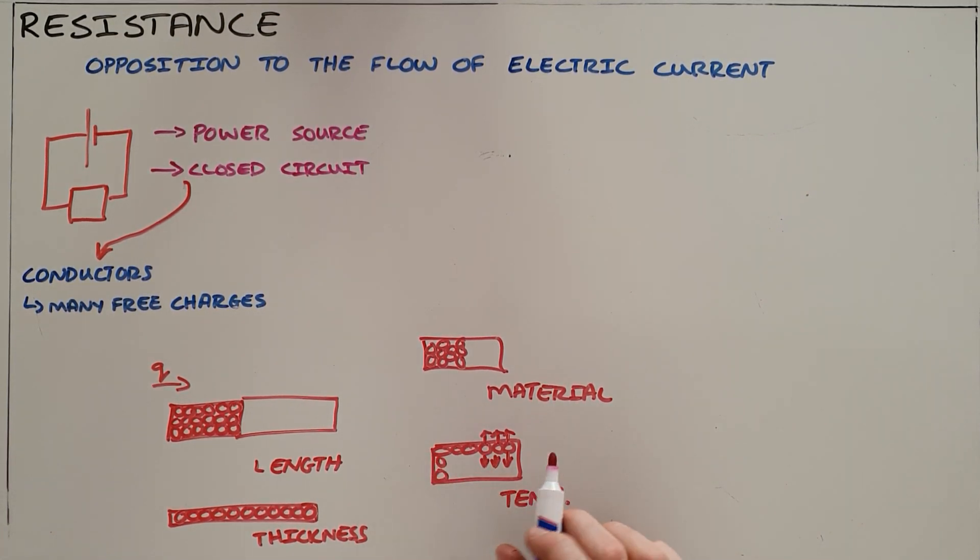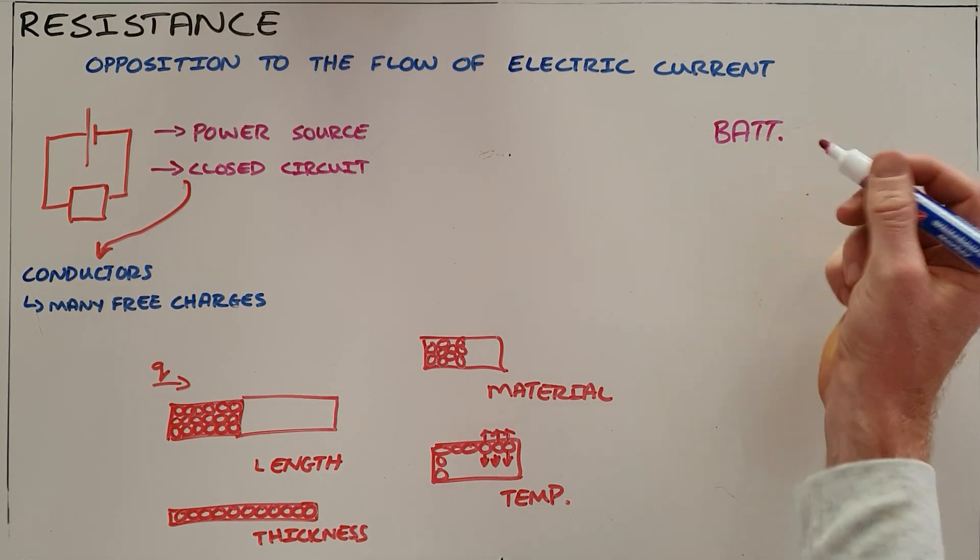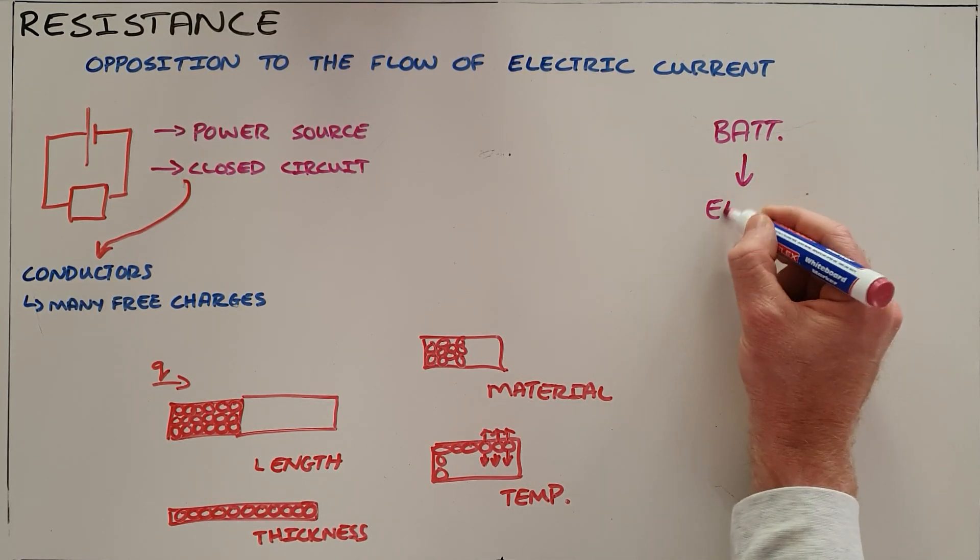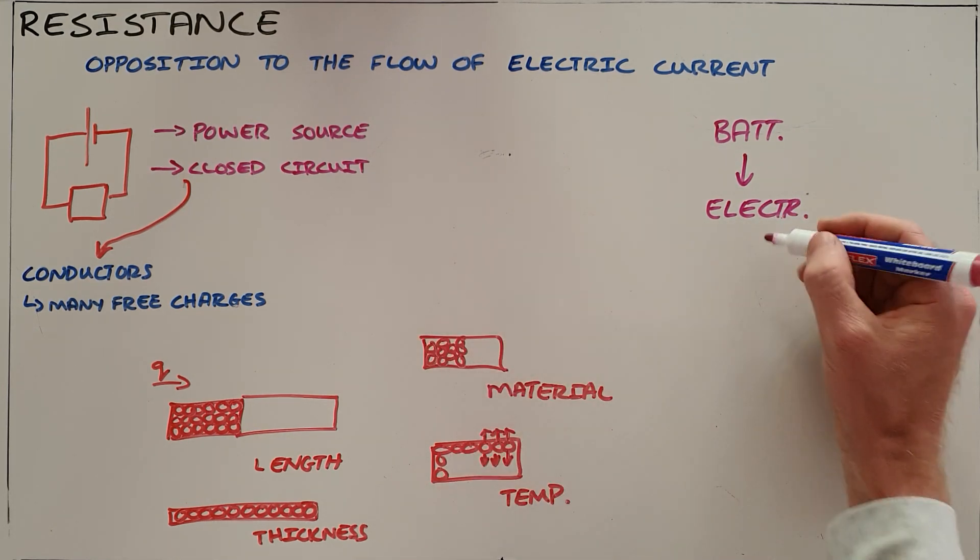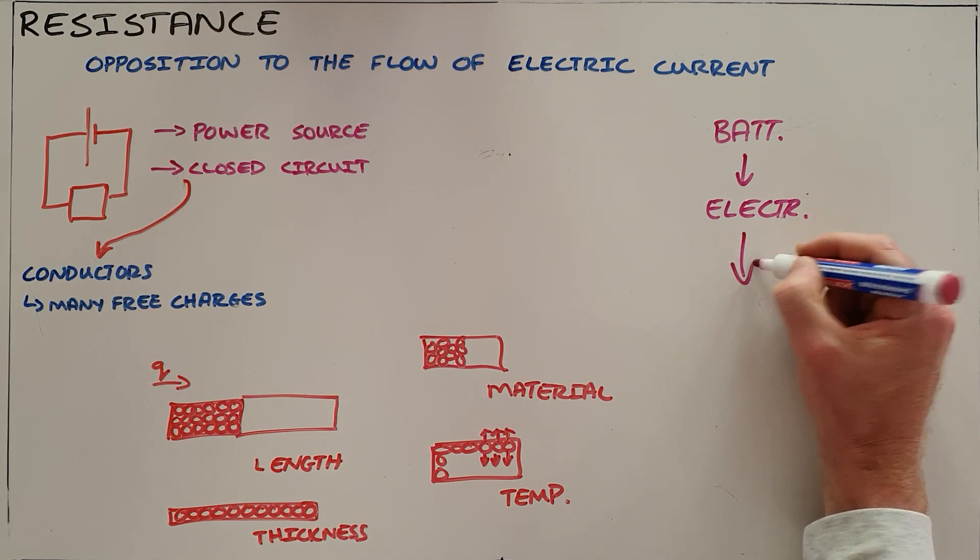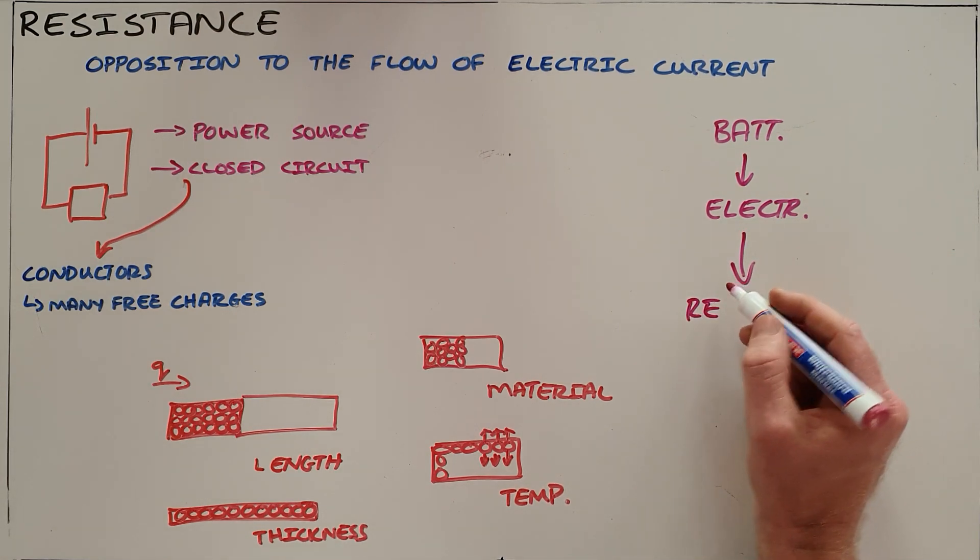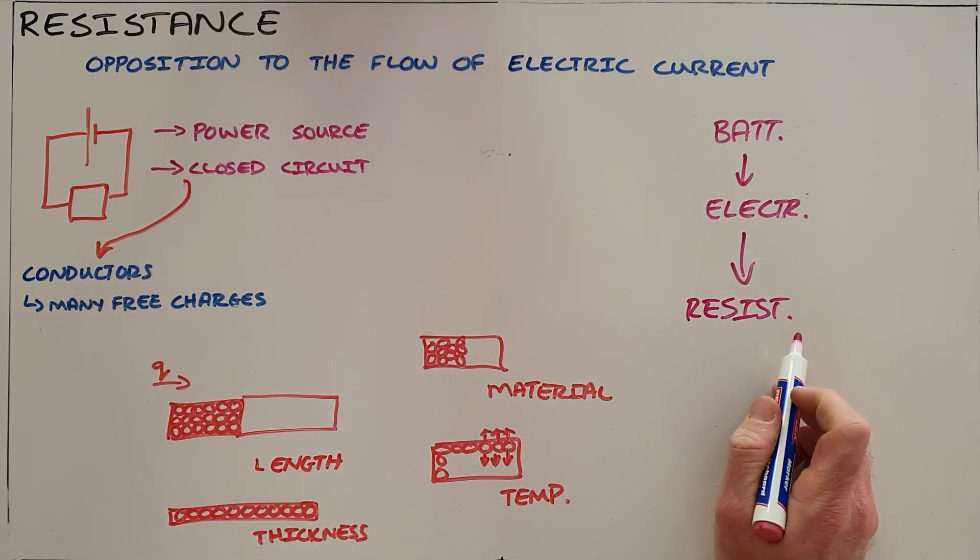Essentially what we have happening in a circuit is a battery that starts out by converting chemical energy into electrical energy. That electrical energy is in the form of charges moving around the circuit in a current, and those charges then come into contact with the resistors where different resistors have different functions.